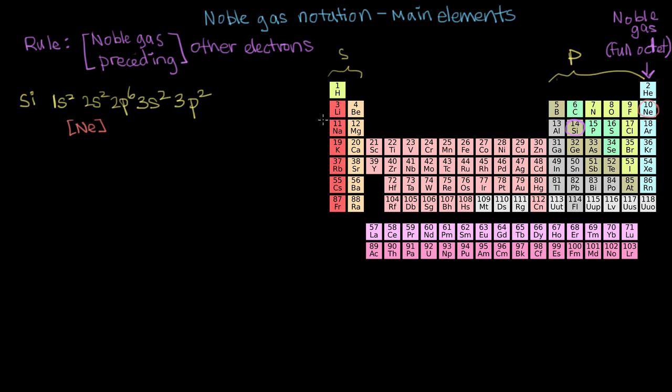And then the other electrons are the ones that come after neon. So we go down, and the electrons that aren't included in neon would be our 3s2 electrons, right here, and the 3p2 electrons.